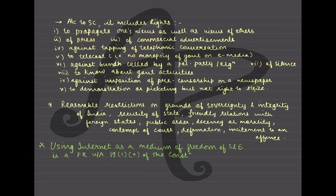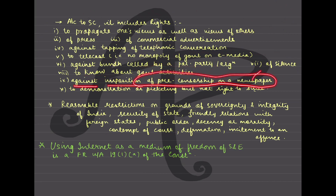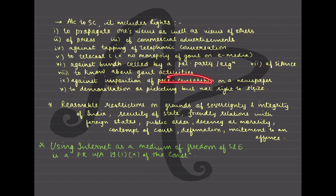Right to know about government activities - which includes RTI and other things. There is also the right against imposition of pre-censorship on a newspaper. One thing is that if they have published something not fulfilling the regulations - that is post-censorship. But the idea here is pre-censorship, so newspapers have the right against that. Also, right to demonstration or picketing is allowed, but not the right to strike.